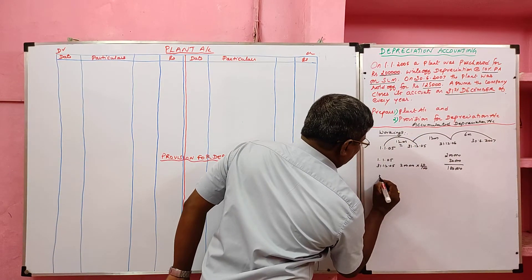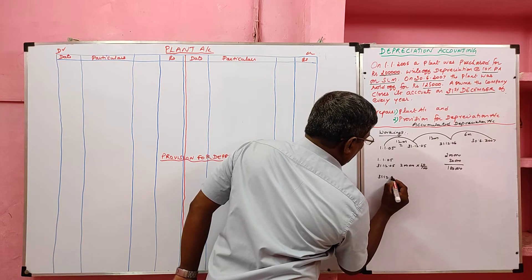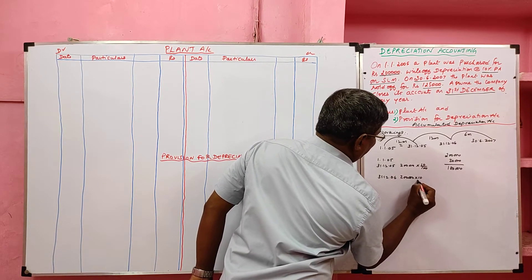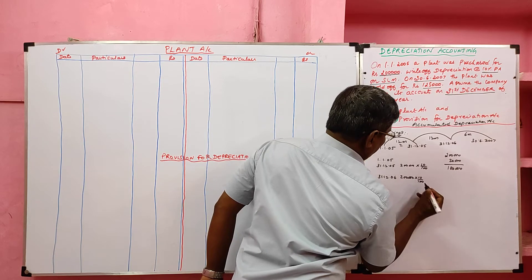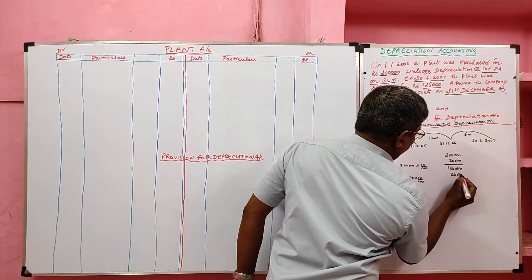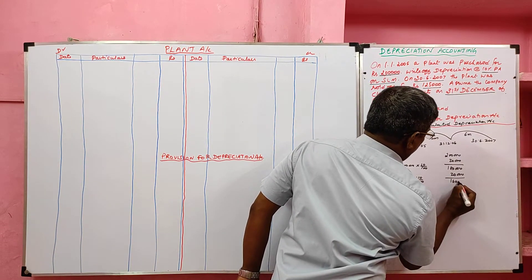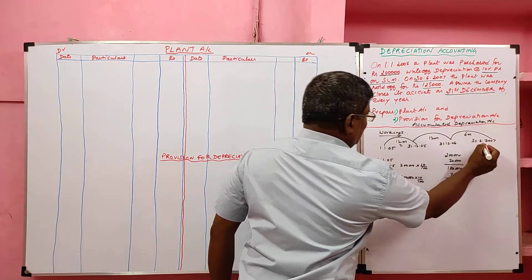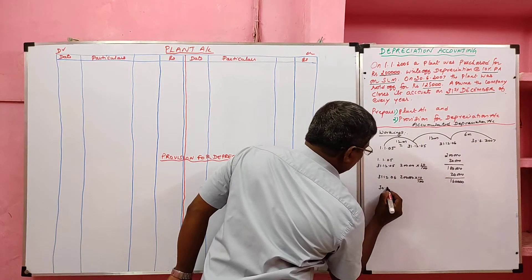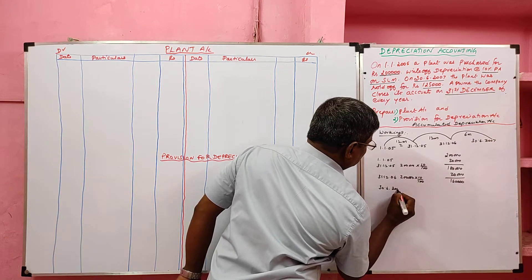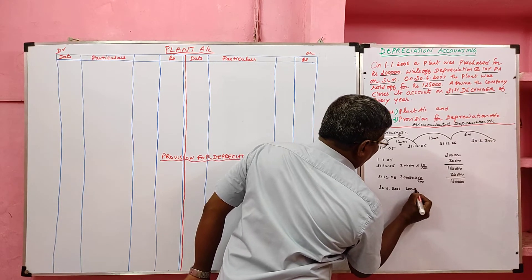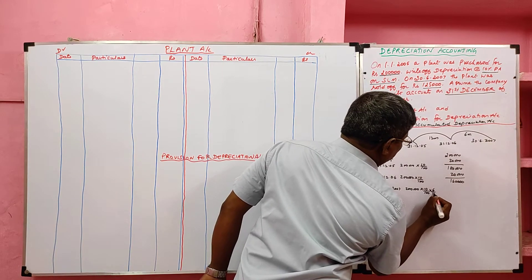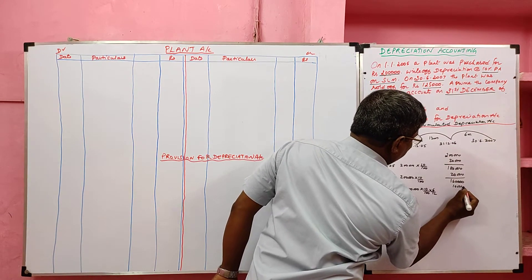The second year ends on 31st December 2006. Again we have to provide depreciation on the original cost since it is the straight line method, so 20,000 again. The book value at the end of the second year is 1 lakh 60,000. The third year ends on 30th June 2007. On 2 lakh at 10% depreciation for six months only, so the depreciation is 10,000 rupees.